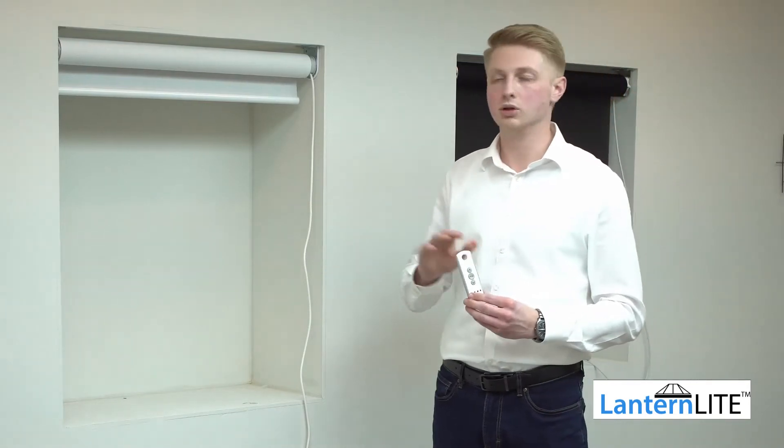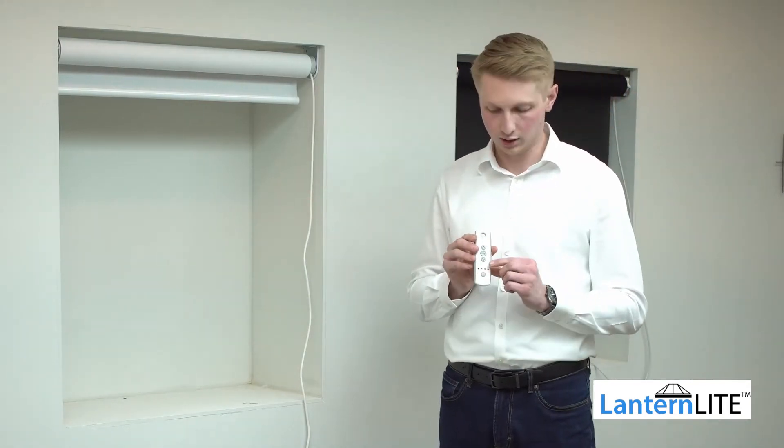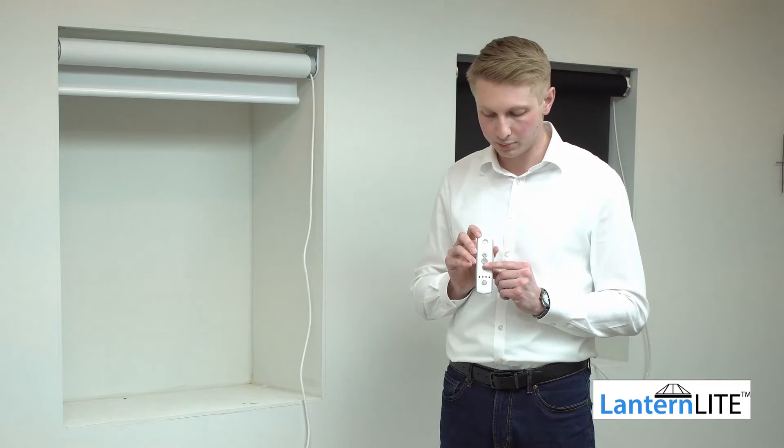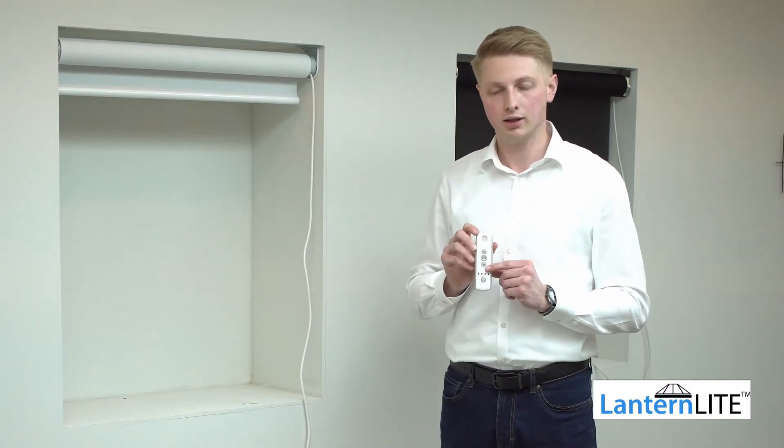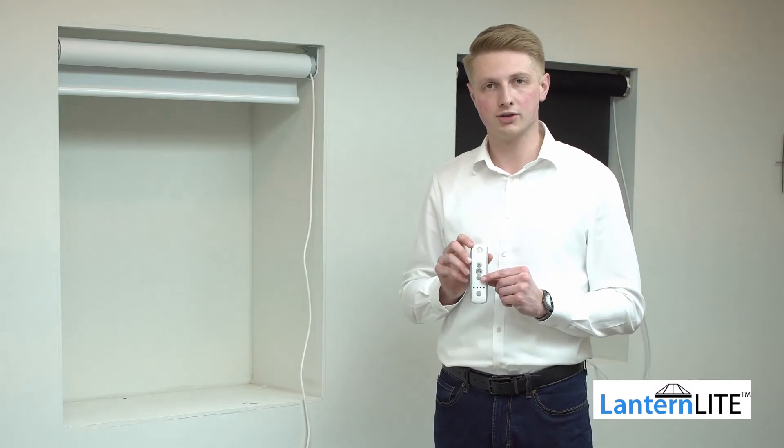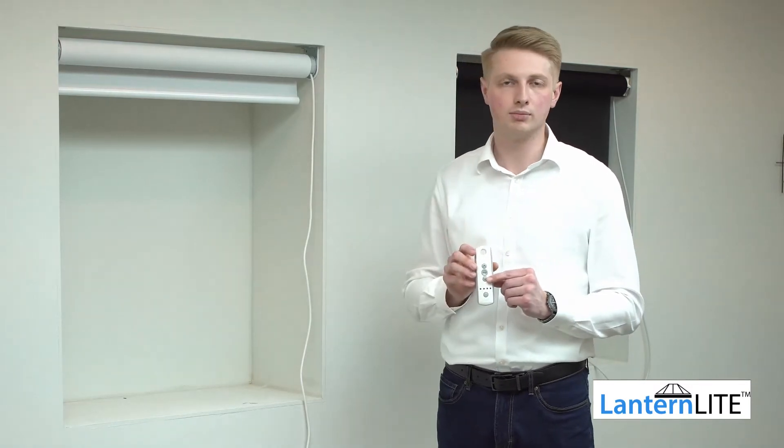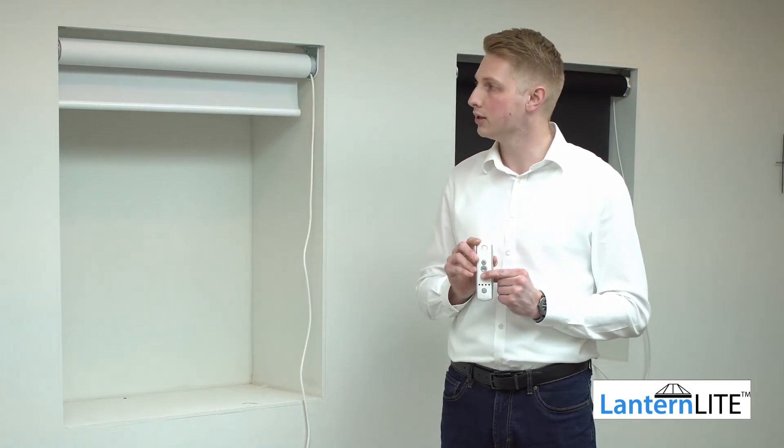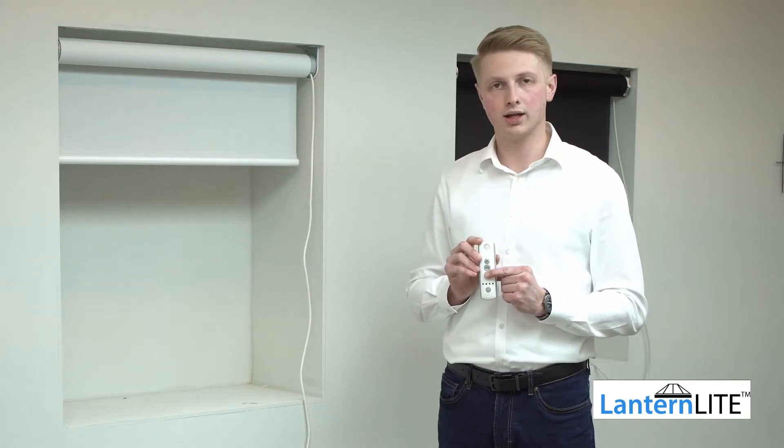This remote control now controls this motor on channel 3. I can check that and check the turning direction by pressing and holding either the up or the down button. You have to press and hold because at this stage the motor is in programming mode. So if I press and hold the down button, the blind does travel down, which is correct.